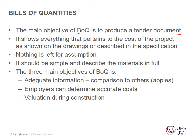It shows everything that pertains to the cost of the project as shown in the drawings and prescribed in the specifications. The easiest and shortest way to describe a bills of quantities — it's basically the drawings put into words and quantified, so that a contractor can systematically price those items. Nothing is left for assumption. For instance, if there is formwork or a chamfer at the edge of concrete beams, that has to be described in your item so the contractor knows how to price for that.